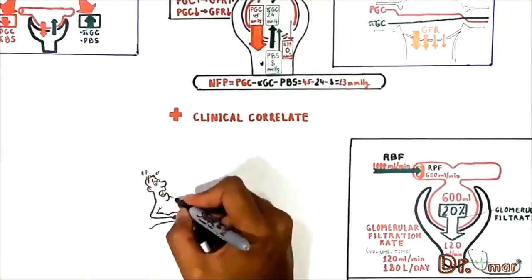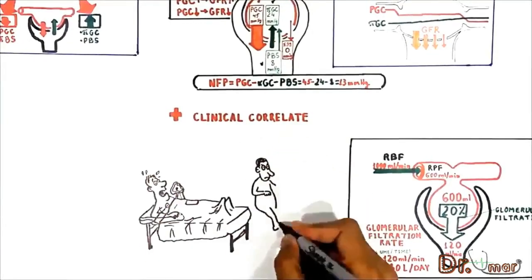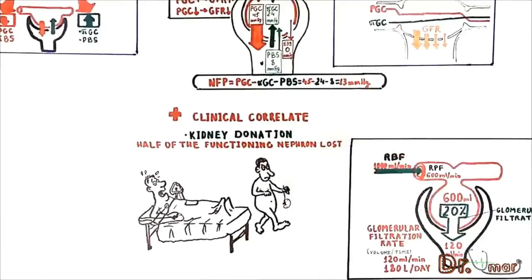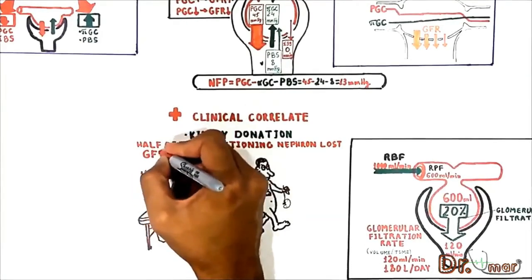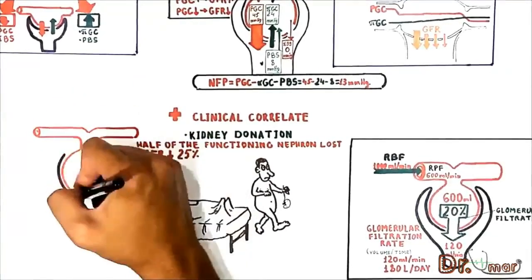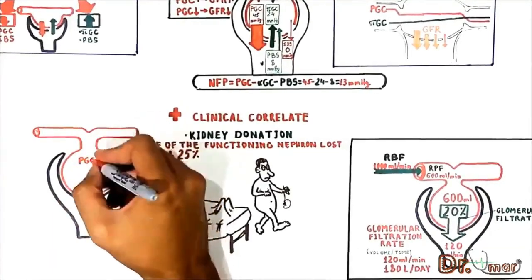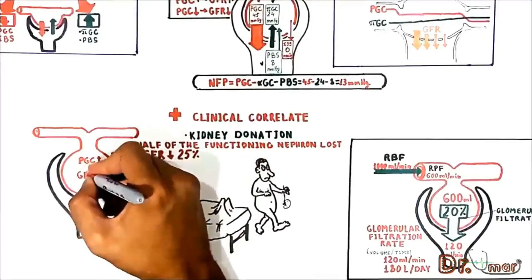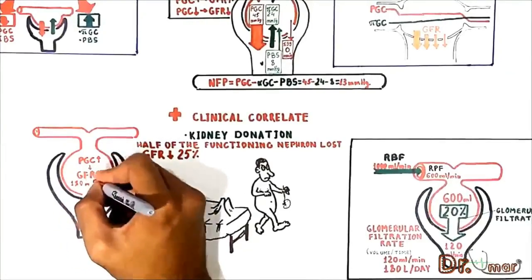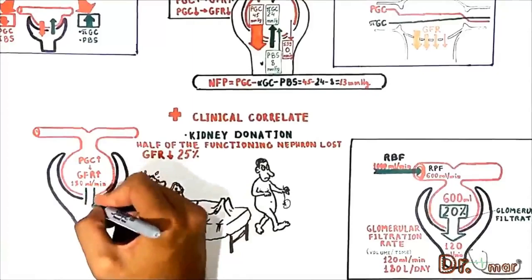If a young individual donates one of his kidneys, the GFR should be cut in half because he has lost half of the functioning nephrons — reducing from 120 down to 60 mls per minute. However, GFR reduces only 25% because the remaining kidney compensates by increasing individual glomerular capillary hydrostatic pressure, which in turn increases GFR. GFR in the remaining kidney increases from 60 up to 90 mls per minute.